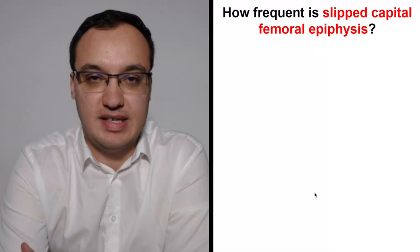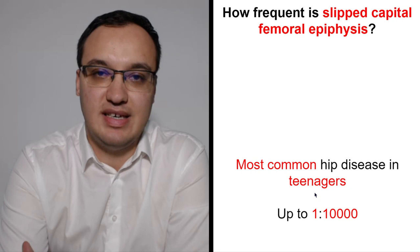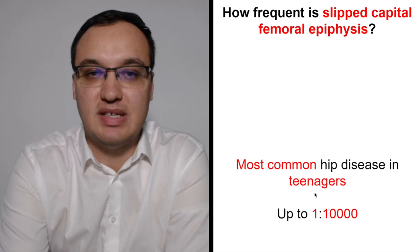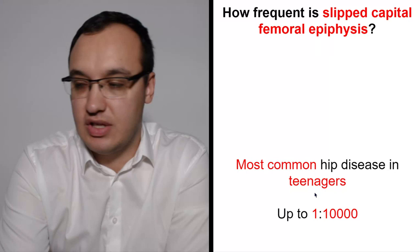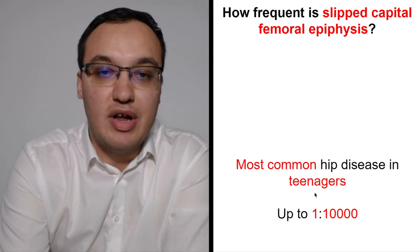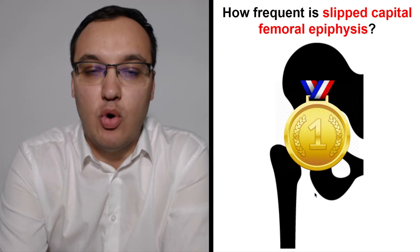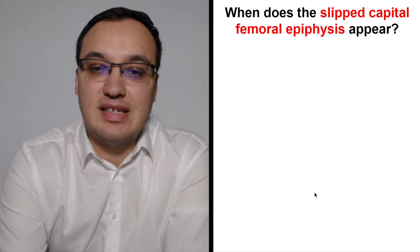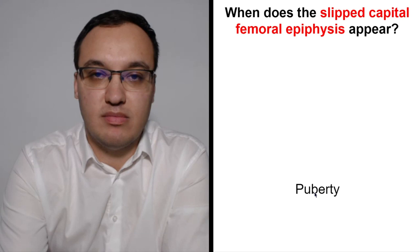Epidemiology — how common is this disease? It is the most common hip disease in teenagers. The incidence is up to 1 in 10,000, which means in a city of 1 million people, around 100 children will have this condition. Remember: most common hip disease in teenagers.